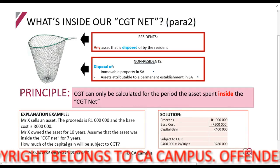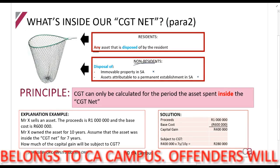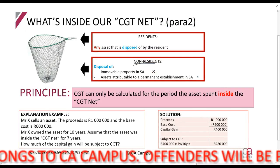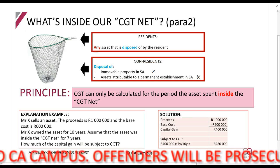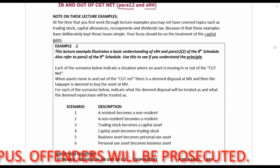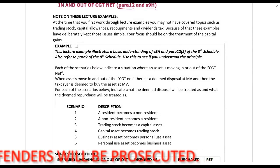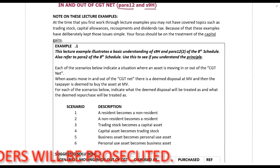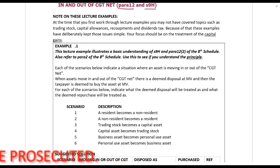As a reminder: for a resident, any asset is in the CGT net. For non-residents, it's immovable property in South Africa and assets attributable to a permanent establishment in South Africa. Also remember, certain assets — for example, personal use assets — will be considered outside of the net because there will never be CGT. Trading stock is also outside of the net because it results in gross income rather than a capital gain.